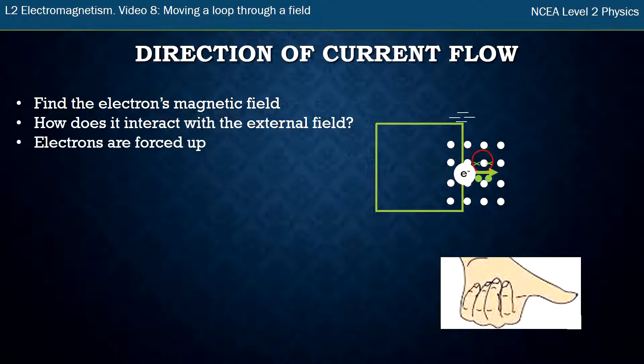What that means is at the top of that section we get negative charges. At the bottom section, because there's a separation of charge, we get positive. So the electrons have been pushed upwards and they can now, because there's a loop, flow around the corner and start flowing in circular motion around the loop in an anti-clockwise direction.